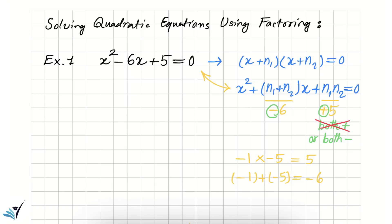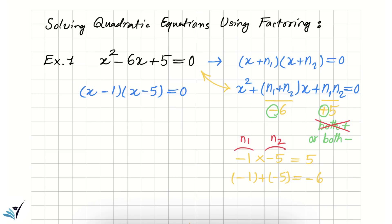We found the pair in our first try. So n1 is negative 1 and n2 is negative 5. Replacing them in the factored form, we get open parenthesis x minus 1 close parenthesis times open parenthesis x minus 5 close parenthesis equals zero. This is the factored form of the original quadratic equation.